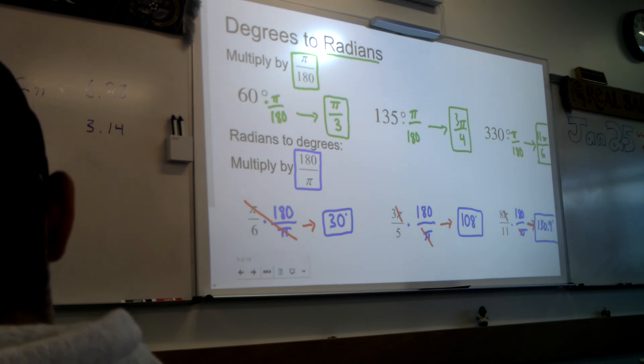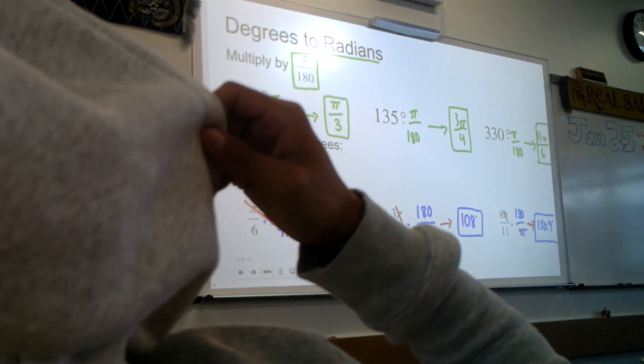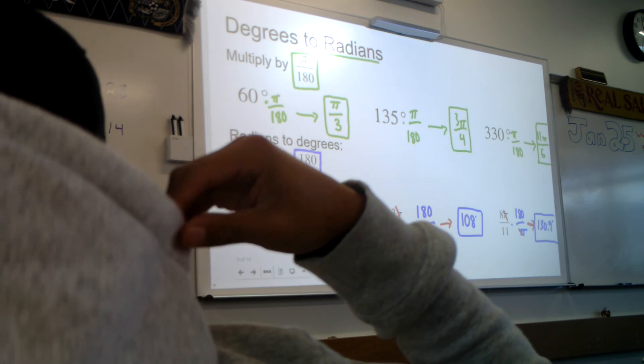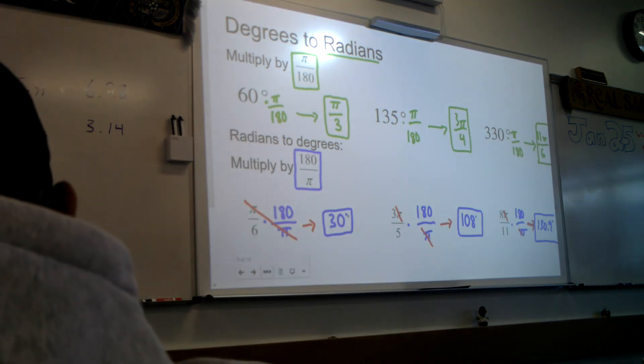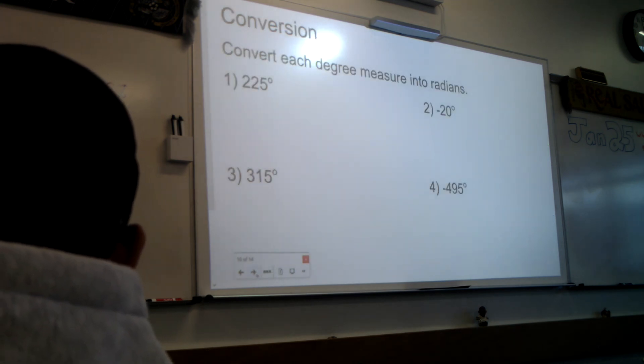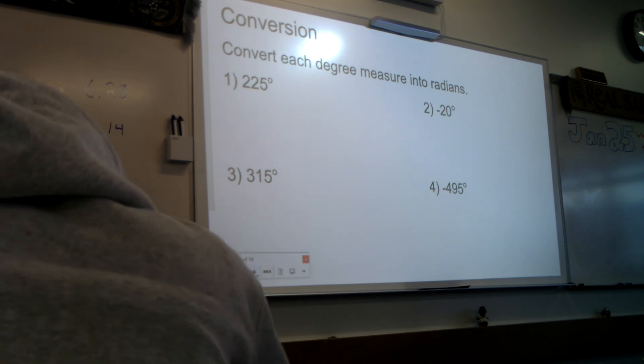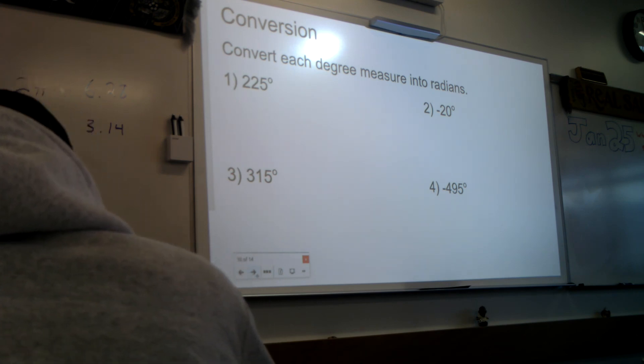Now for degrees we put that little circle up there, a little dot. Technically for radians we should write out radians, so you know it's in radians. But usually just seeing the π is kind of a clue that it's in radians. All right, now here's what I'm going to do. I'm going to give you 4 minutes to do 8 problems. For the first 4, 1 through 4, you're going from degrees into radians. What does that mean you're multiplying by to get from degrees to radians? π over 180.